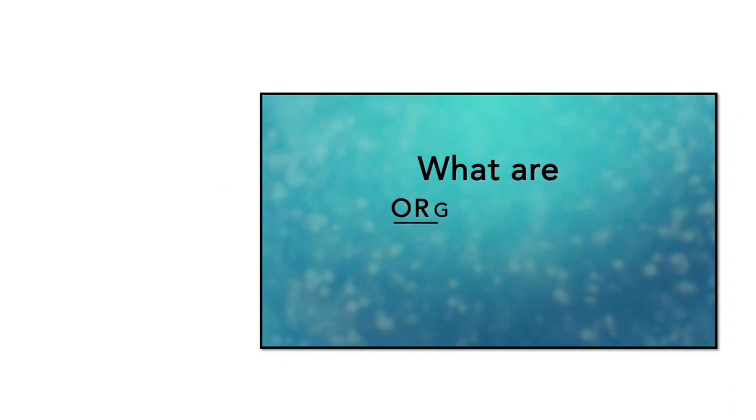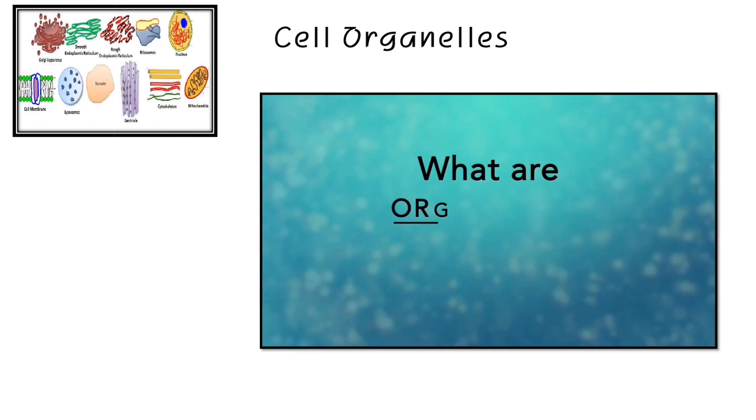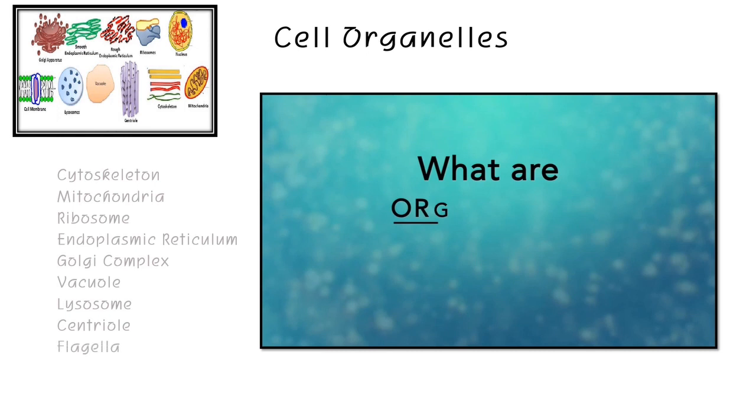So, cell organelles, what really are cell organelles? They are so-called as the little organs. They are special parts of the cell with unique jobs to perform. The following are cell organelles: cytoskeleton, mitochondria, ribosomes, endoplasmic reticulum, Golgi complex, vacuole, lysosomes, centrioles, flagella, and chloroplasts.